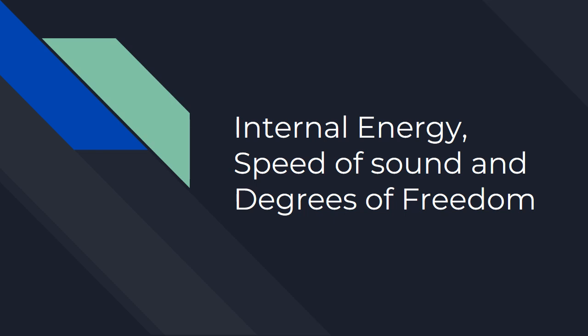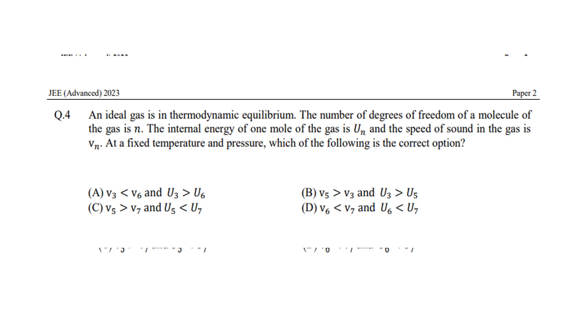An ideal gas is in thermodynamic equilibrium. The number of degrees of freedom of a molecule of the gas is n. The internal energy of one mole of gas is Un, and the speed of sound in the gas is vn at a fixed temperature and pressure.